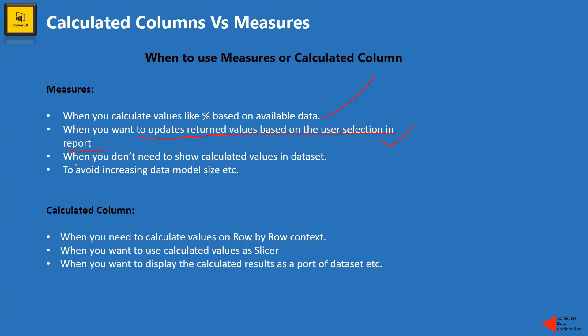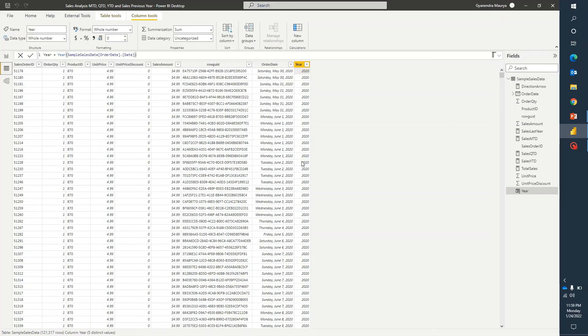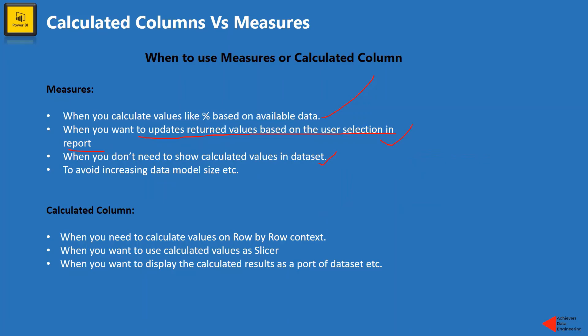Now, another point is when you don't need to show the calculated values in the dataset. So if there is no requirement of showing actual values in this format as a kind of report in Power BI, then you should avoid creating calculated columns and instead go for measures. And if you want to avoid increasing data model size, so as we discussed calculated column occupies space and so apparently they will increase the data model size. So if you want to avoid that, and if you have an option to go for measure, you should consider creating a measure.